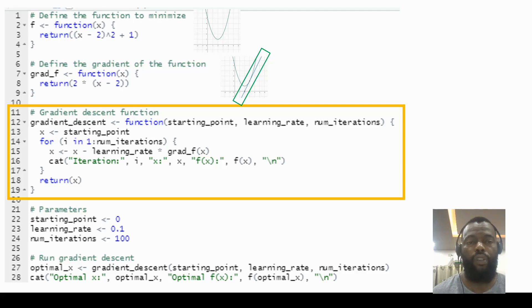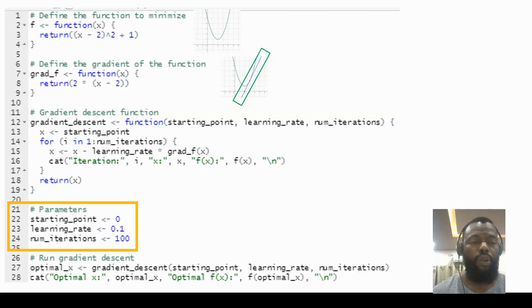And here we have a gradient descent function with some parameters: starting point, learning rate, and number of iterations. In each iteration we update the values.